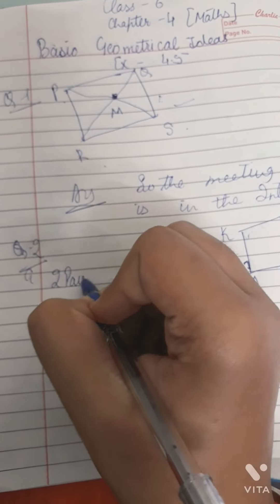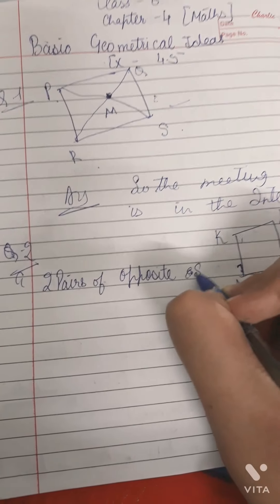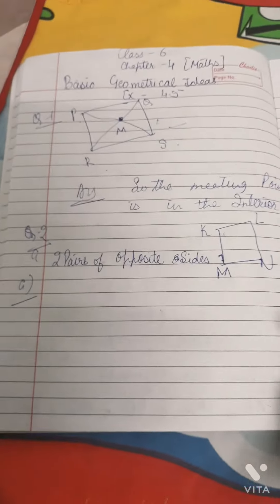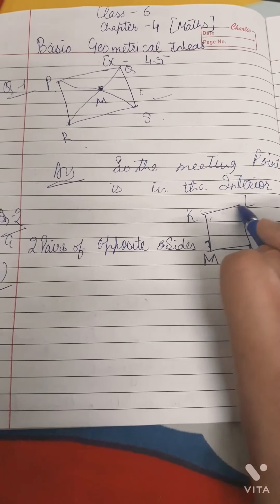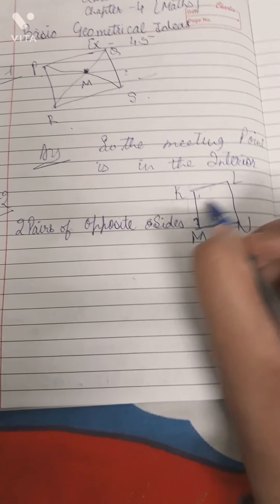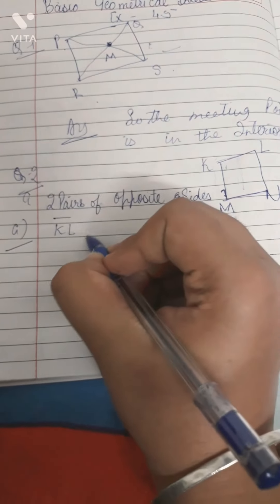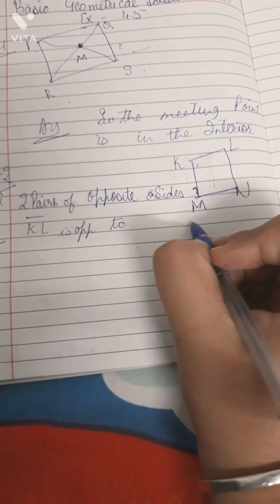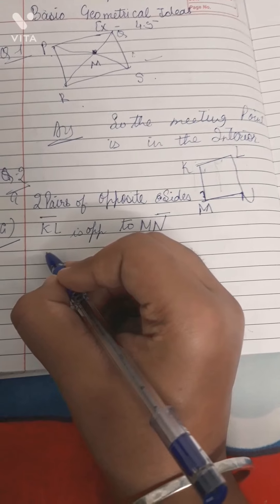The first part, part (a), asks for two pairs of opposite sides. What is going to be the opposite side? As I told you in the introduction, if you have not seen it please go watch the introduction part before doing the exercises. Two pairs of opposite sides: this is one side, second side, third side, fourth side. The sides which are opposite make a cross. This side will be opposite to this side, so KL is opposite to MN — that is your first pair.